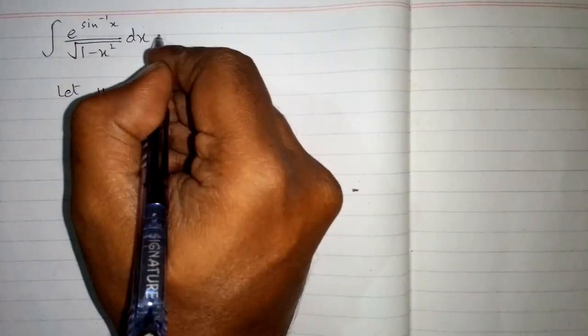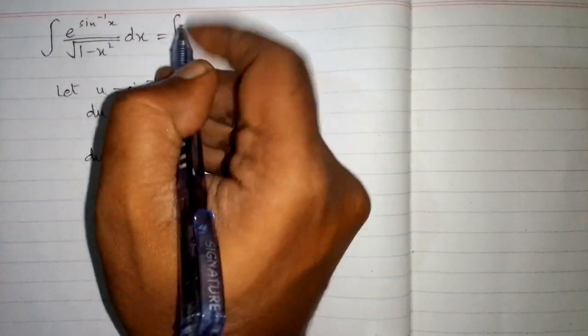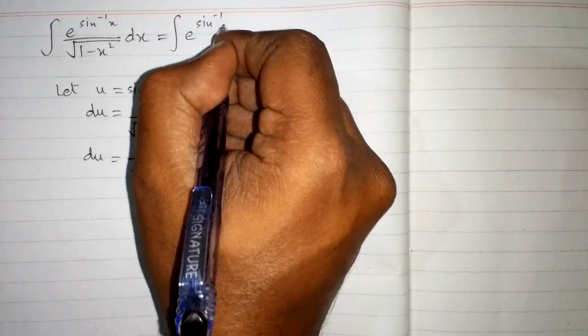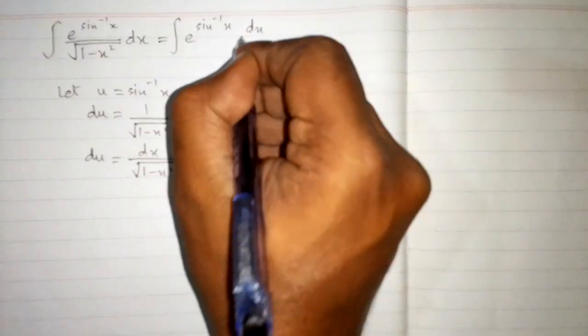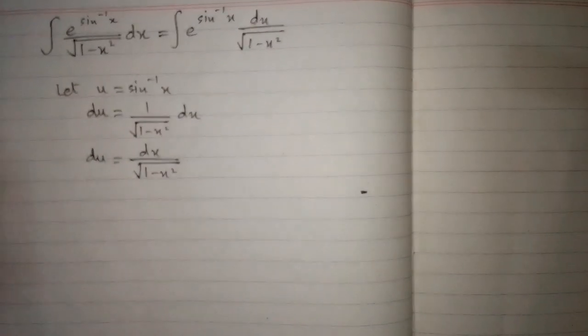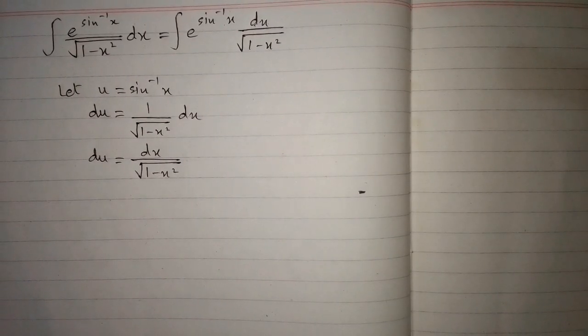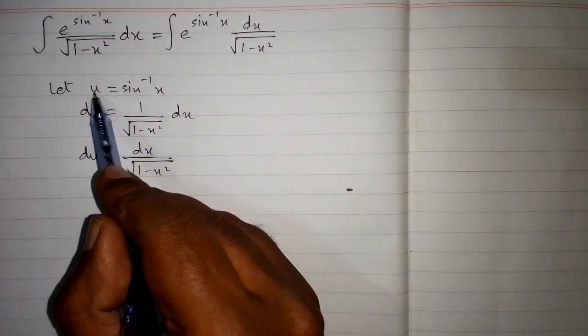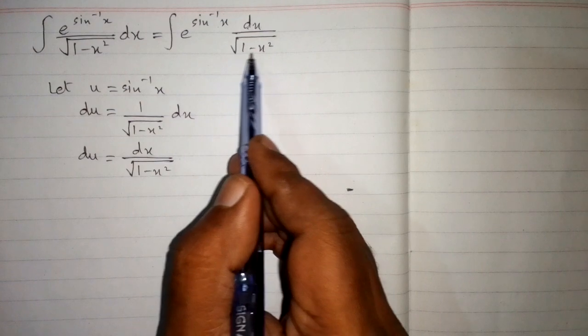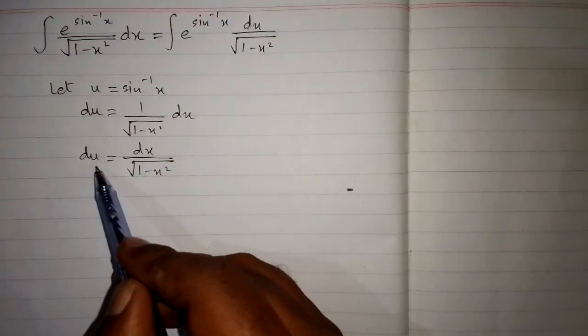Now the above integral can be written as e to the power sine inverse x multiplied by dx upon the square root of 1 minus x square. Now we will put u in place of sine inverse x, and in place of dx upon the square root of 1 minus x square, we will put du.